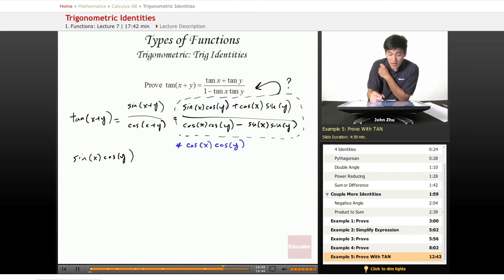So for example, cosine of y here will cancel out with cosine of y here. Cosine of x here will cancel with cosine of x. And same with the terms in the denominator.